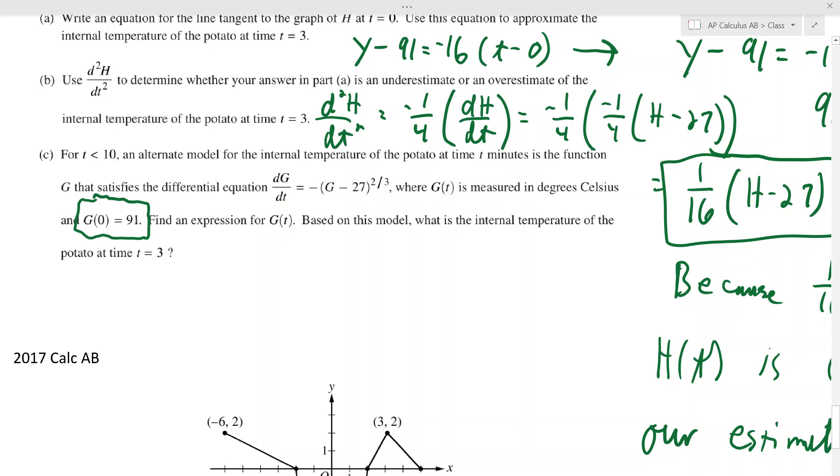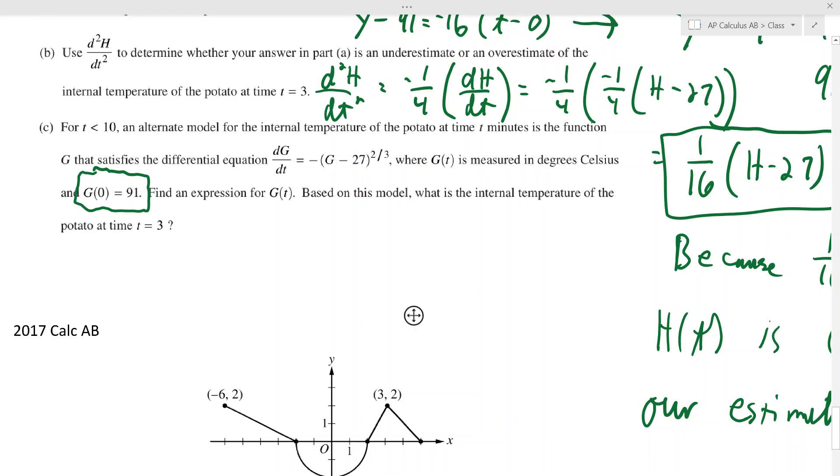They give us this derivative here and they want to know what's the internal temperature at three after we find G of t. So all they're really asking you to do here is find the solution to this differential equation. And what we talked about before was to find a solution to a differential equation. The way you solve a differential equation is you separate the variables and you integrate both sides because G is my dependent variable here.